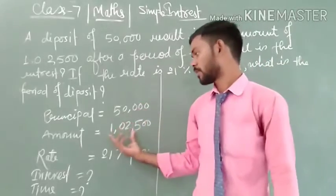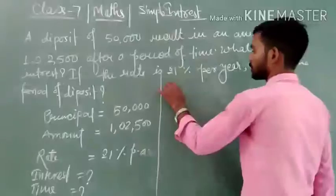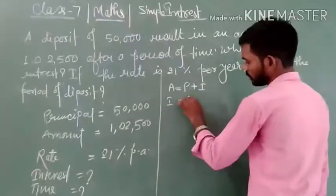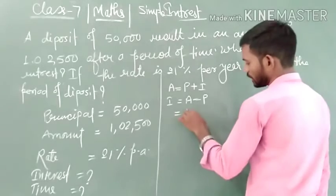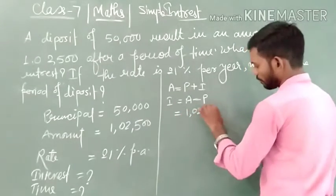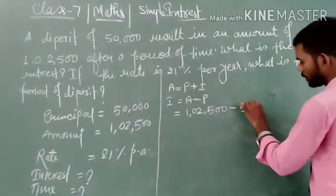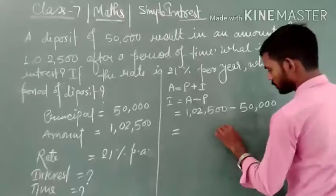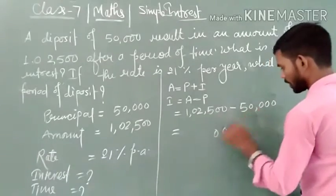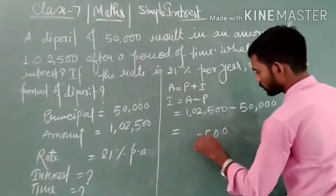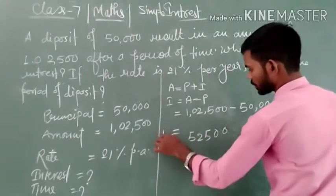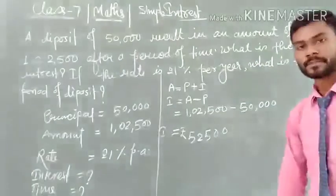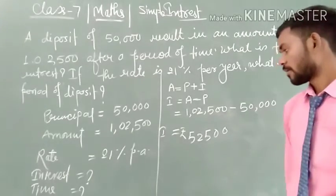We know that amount is equal to principal plus interest, that is A = P + I. So from here we can write I is equal to A minus P. Now putting the values: 1,02,500 minus 50,000. Solving this, we get our interest is 52,500. The interest is 52,500.